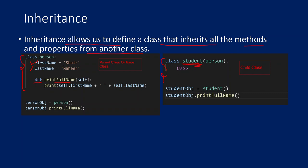How to create an inheritance between two classes? On the child class — the class which is going to inherit from another class and take its properties and methods — you will pass your parent class as a parameter to the child class. Once you do that, all the properties and all the methods inside the parent class will automatically be available in the object of the student class as well.